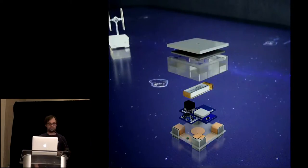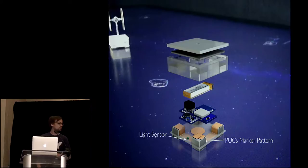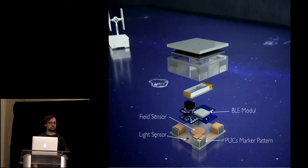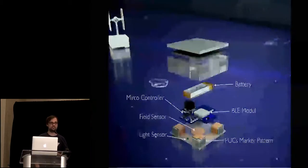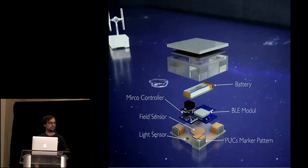So let's have a look inside these tangibles how they really look. As I told you we have this marker pattern consisting of three conductive pads. We have our light sensor which allows us to scan for the position. We have the field sensor which picks up the signal. There's a Bluetooth element which is communicating to the system and a small microcontroller which is doing all the work but mostly sleeping. And a battery which allows us to run the tangibles for like five days in a row without needing to be charged.